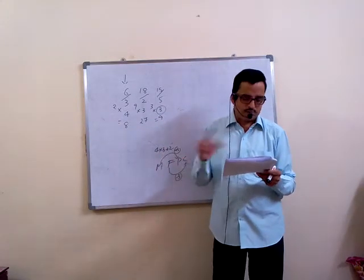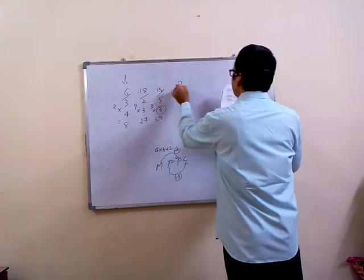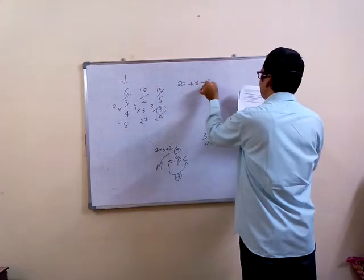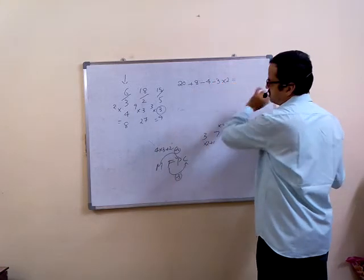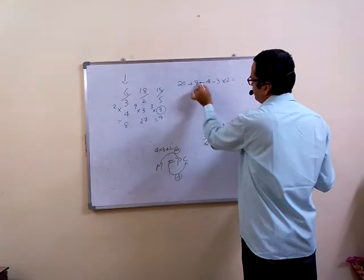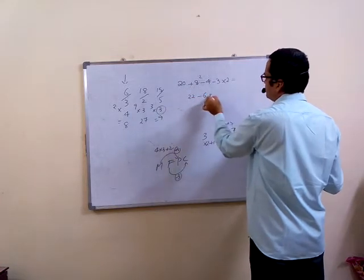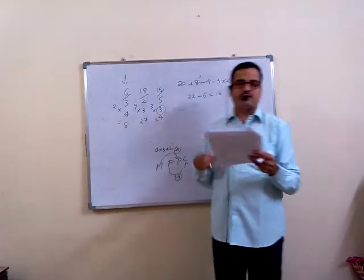Fifteenth, symbols and operations. Let us directly decode. 20 plus 8 divided by 4 minus 3 into 2. You have to find out, it's 16. 8 divided by 4 equals 2. 20 plus 2 equals 22 minus 6, that is equal to 16. So matching. Answer is 16, fifteenth question, third option.